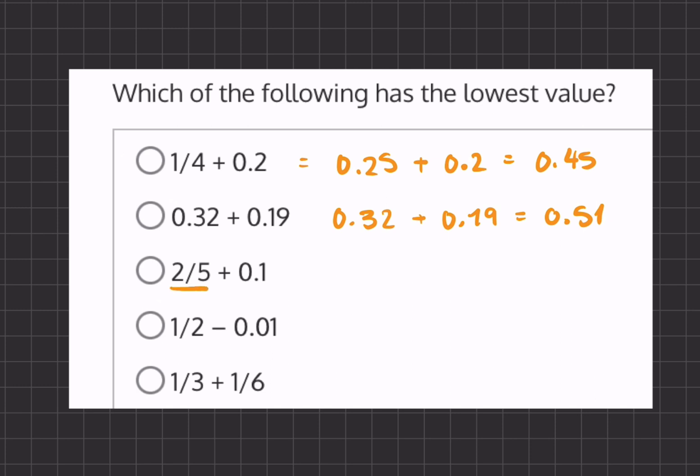2 over 5 is like saying 0.4 in decimal form, and if we add 0.1, we'll get 0.5 or half.